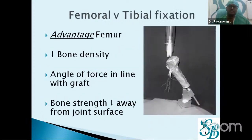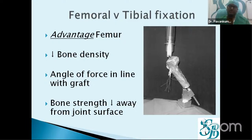Why discuss tibial fixation options separately? When comparing femur versus tibial fixation, there is a definite advantage for the femur side: bone density seems to be lower on the tibial side, the angle of force is more in line with the graft on the femur side compared to the tibia, and bone strength decreases away from the joint surface on the tibial side. Femoral fixations therefore tend to be more stable and reliable than tibial fixations.